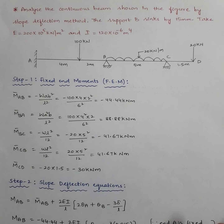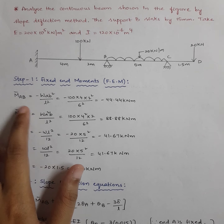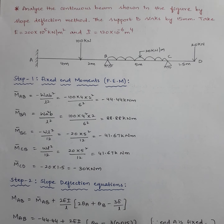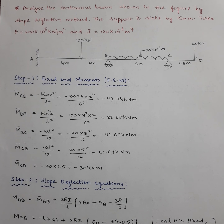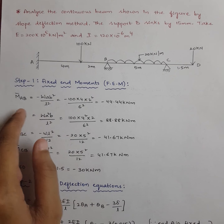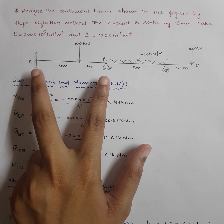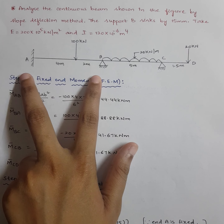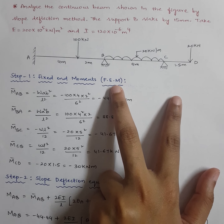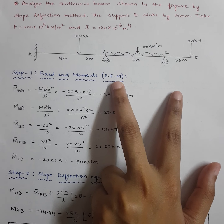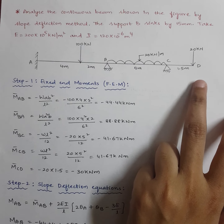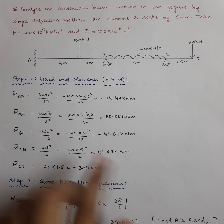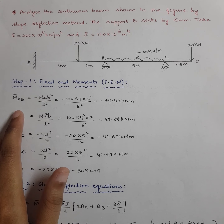For every span you'll have two moments — one in the clockwise direction and the other in the anticlockwise direction. For span AB you'll get two moments, for span BC you'll get two moments, so there will be four total. Plus one moment coming at D, giving a total of five fixed end moments: M̄AB, M̄BA, M̄BC, M̄CB, and M̄CD.